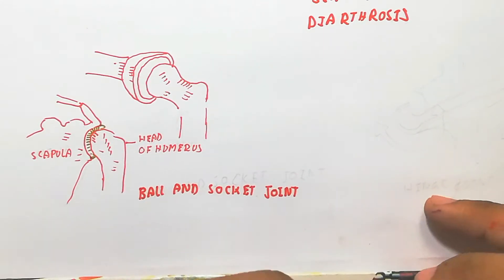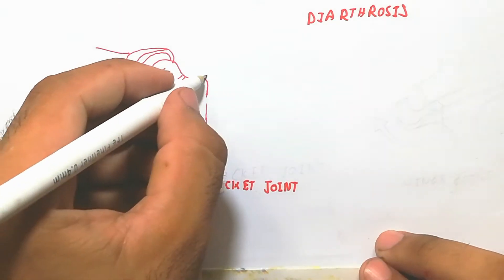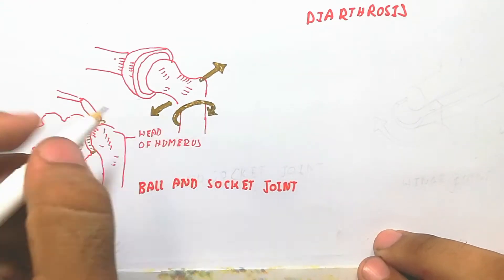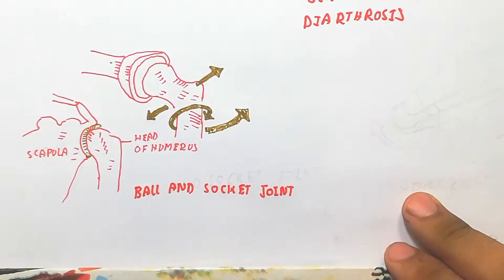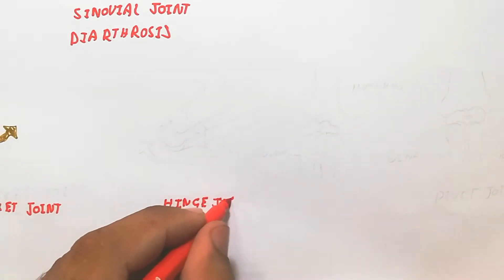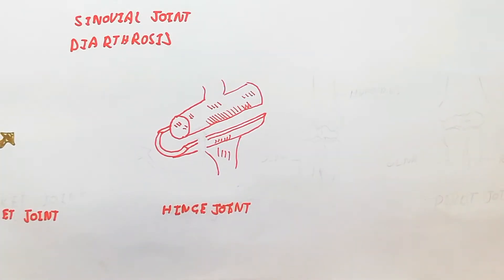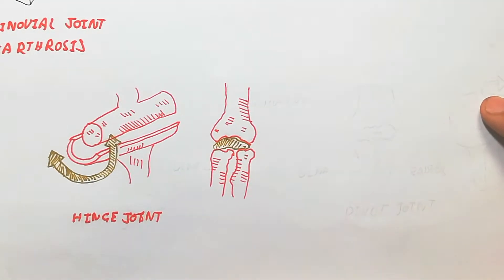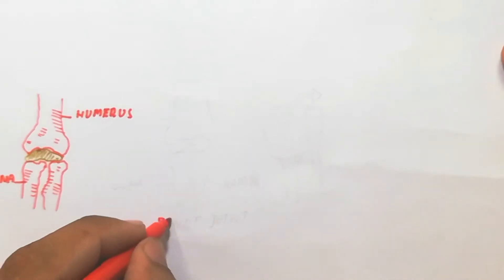This is the ball and socket joint, which can move freely upward and downward — it is a freely movable joint. On the other hand, the hinge joint has two-sided movement. For example, looking here, the movement is two-sided. The hinge joint is also present in our ulna and radius, which are attached by the humerus.